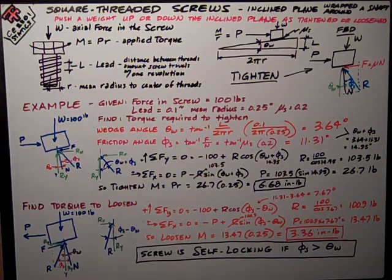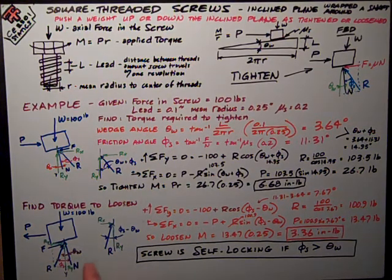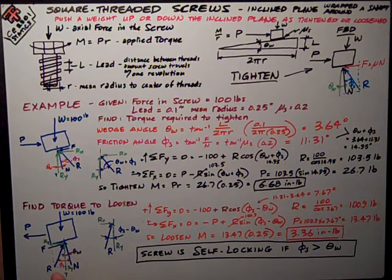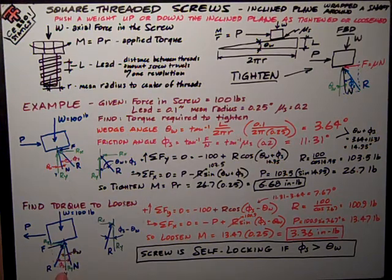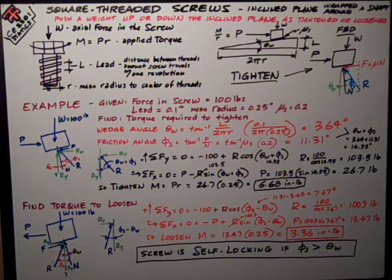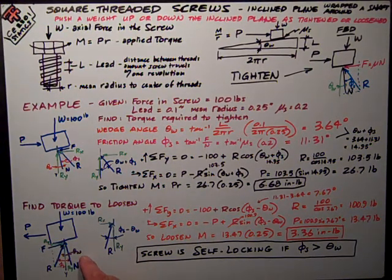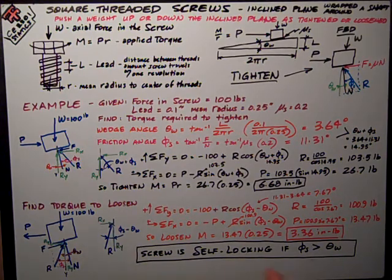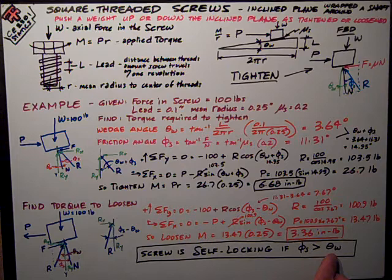The big question is, is the screw self-locking? You can see from this angle, from this geometry down here, if the friction angle was so small that it was over here to the right side of the vertical line, that green vertical line, then it wouldn't take any force to unlock it. It would loosen up on its own. So, as long as the friction angle φ_s is greater than the wedge angle, the screw will be self-locking.